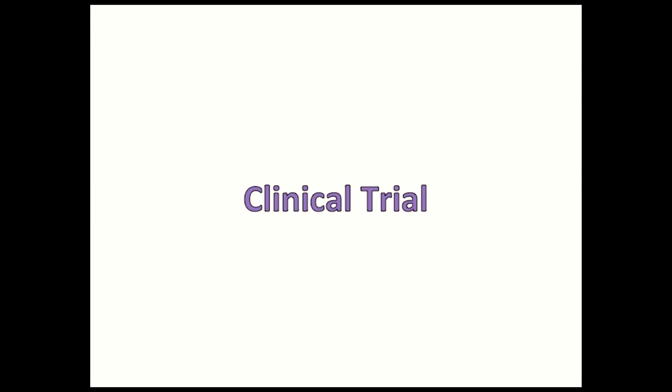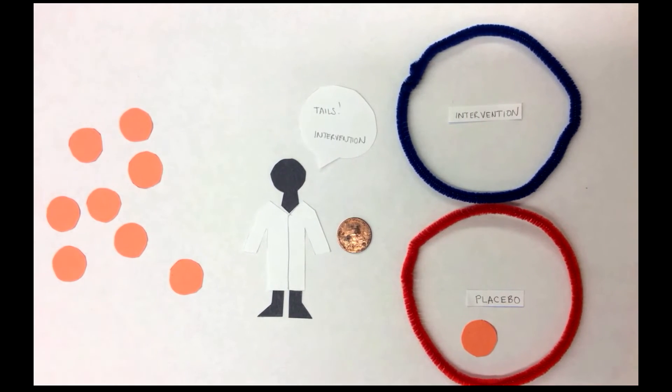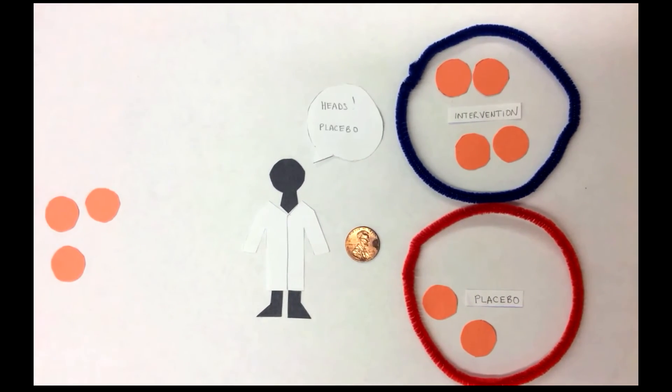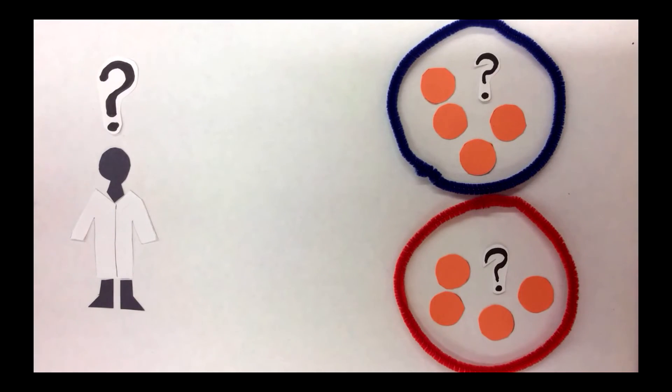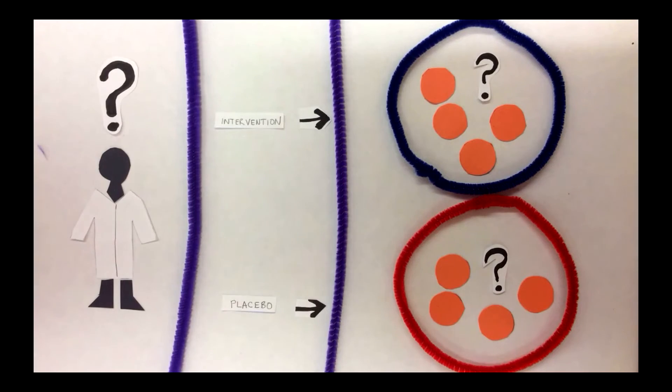Interventions can be studied in a type of experimental design called a clinical trial. Clinical trials usually involve people being randomly assigned to the true intervention or a fake intervention called a placebo. Clinical trials that are set up using randomized assignment to the intervention or placebo groups, and when the people that collect the data and the people that are part of the study don't know if they are taking the true intervention or the fake placebo, it's called a double blind.